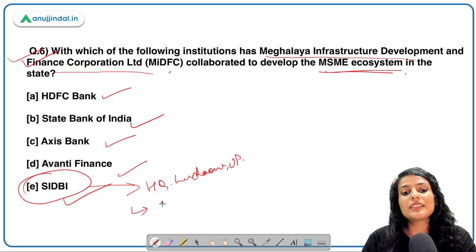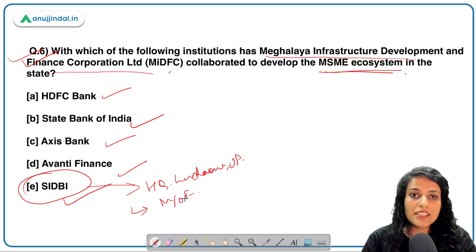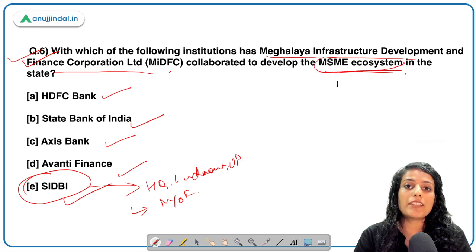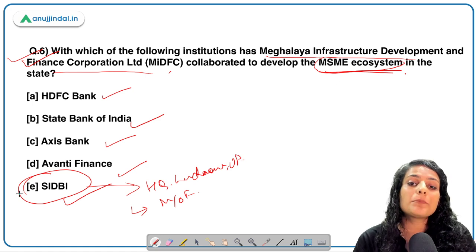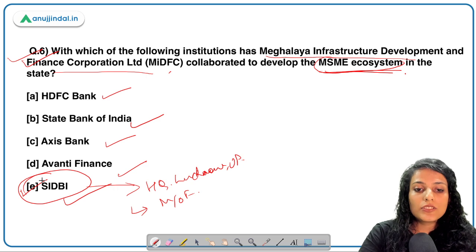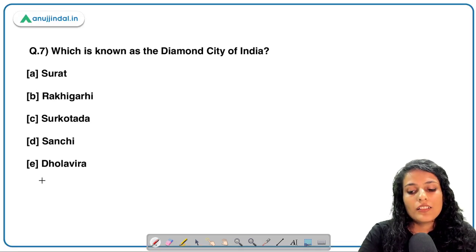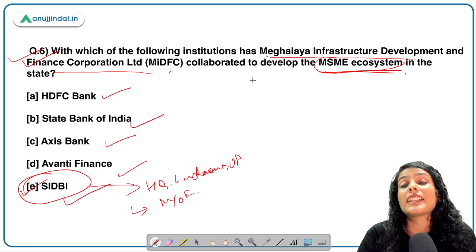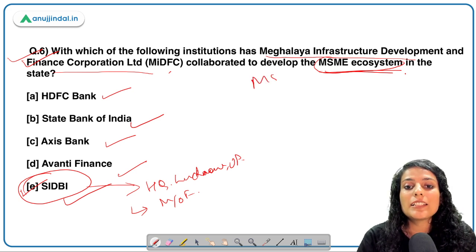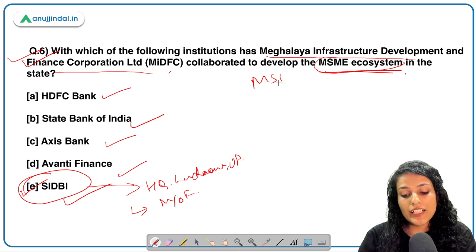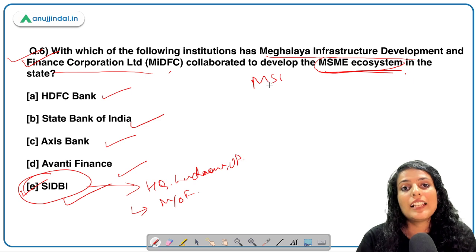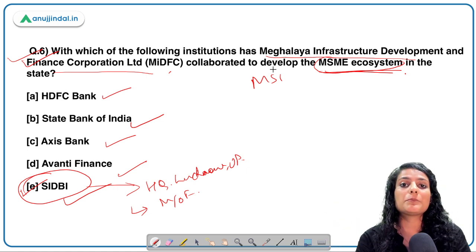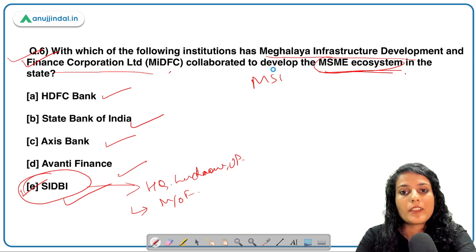SIDBI comes under the Ministry of Finance. As the name suggests — Small Business Industrial Development — that should have been a major hint. This collaboration will focus on developing the MSME ecosystem in the state of Meghalaya. It will help build MSME infrastructure and technology, equip people, and help incubate startups and entrepreneurs.